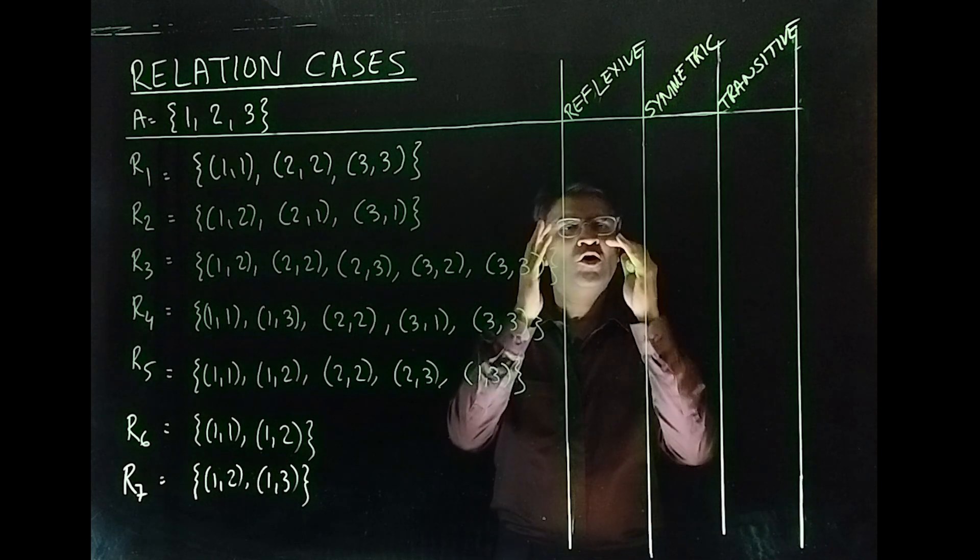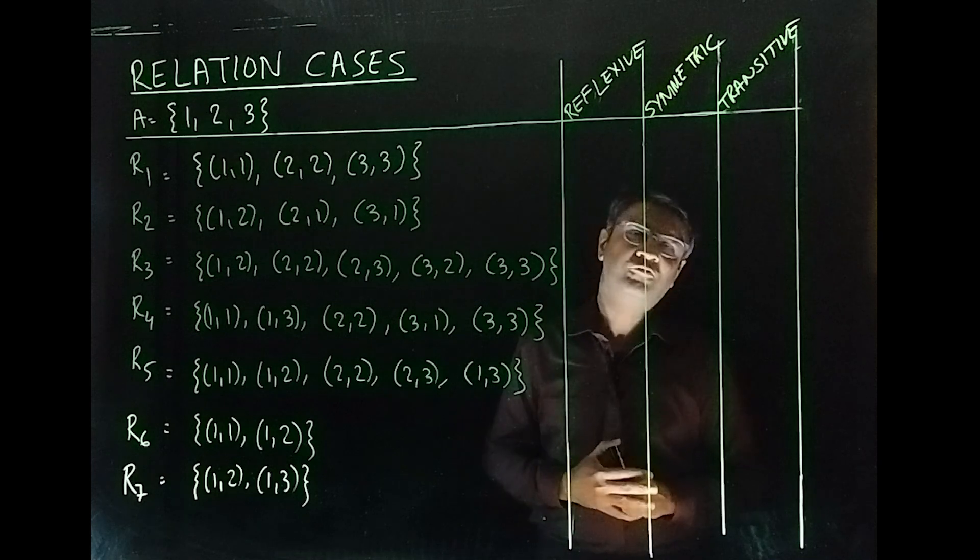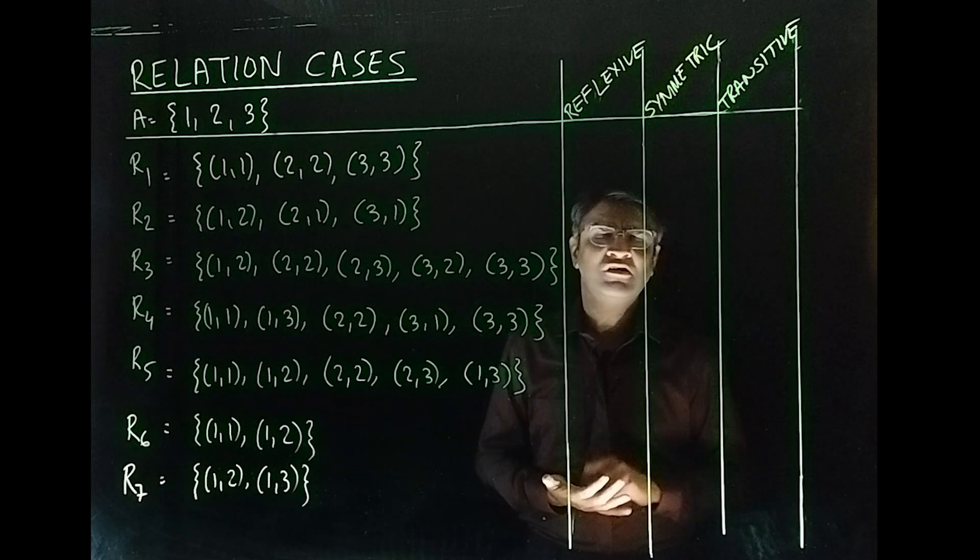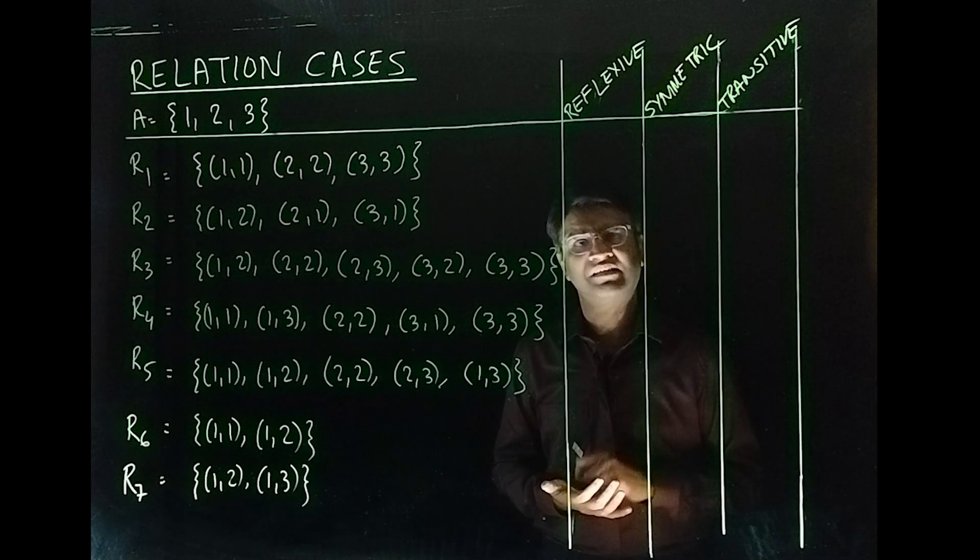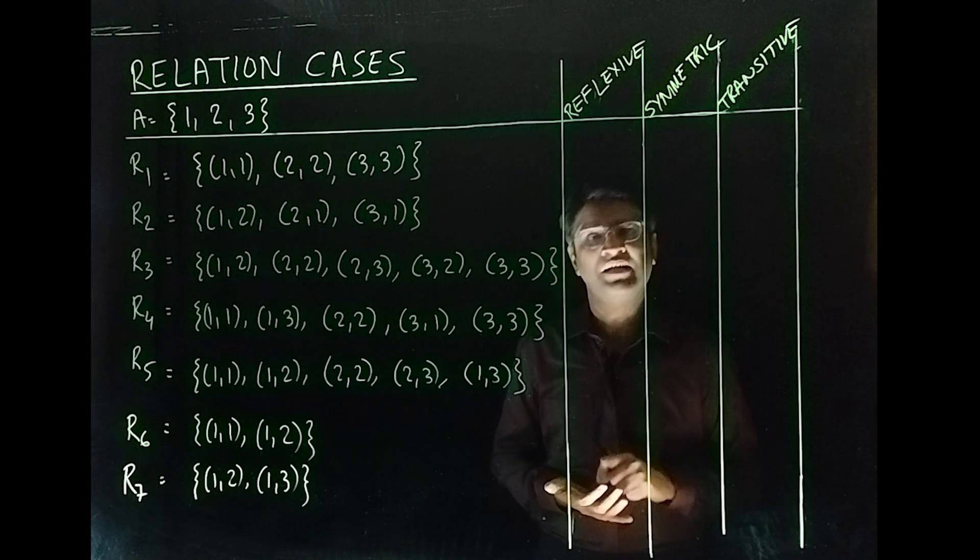Let's start. So reflexive, what is reflexive? If a term is related to itself, then it is reflexive. That means (A,A), (1,1), (X,X).